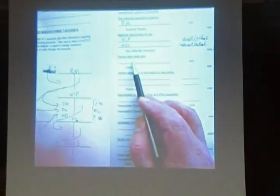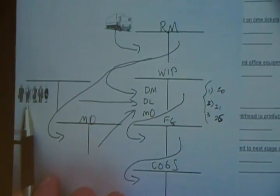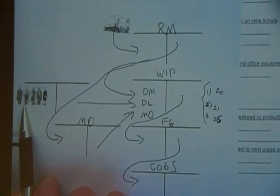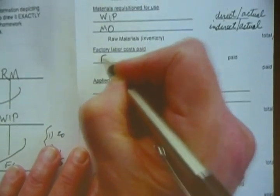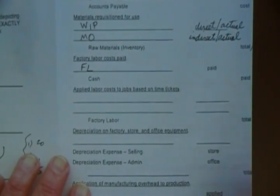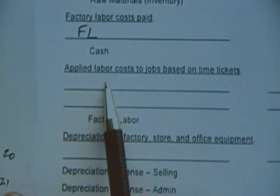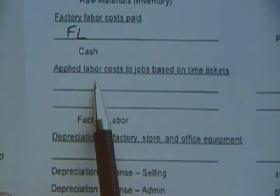Factory labor cost: what journal entry did we make to give these people the privilege of standing on our debit side? It's debit factory labor and credit cash. Factory labor is an account — it's an allocation account. We're going to accumulate some information there and allocate it other places. Then we kept up with the job they did, the work they did, and we're now ready to allocate those costs to production.